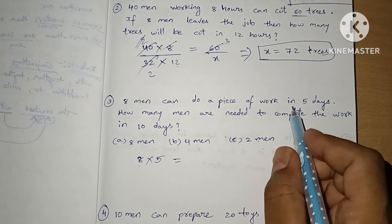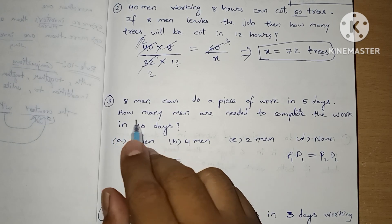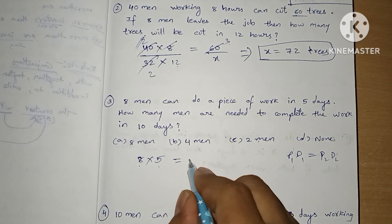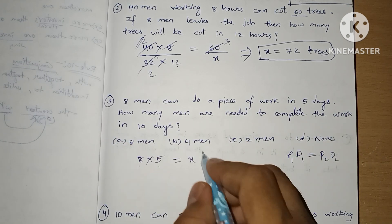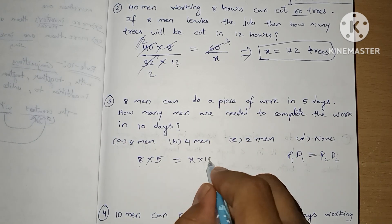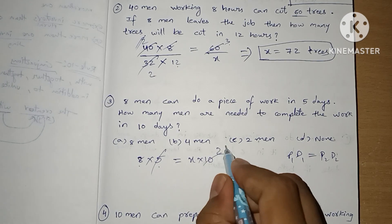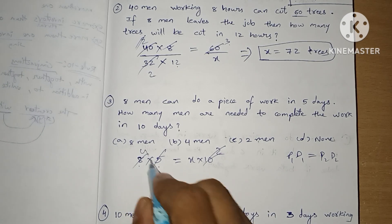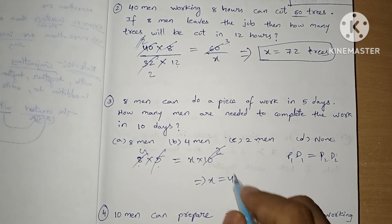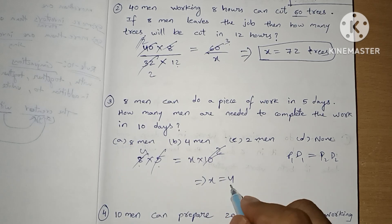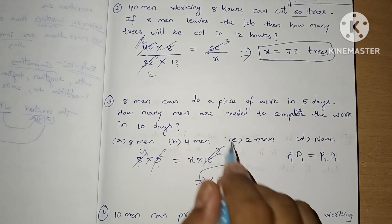8 persons working 5 days. How many men are needed to complete the work in 10 days? Dividing by 2 twice gives us 4. 4 men are needed to complete the work in 10 days.